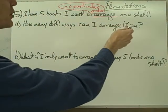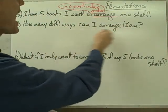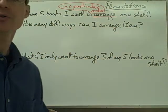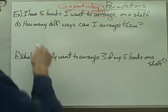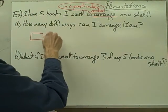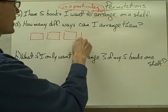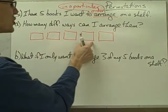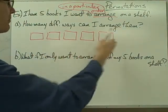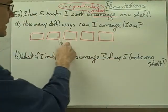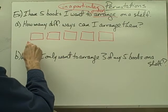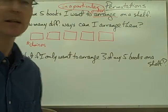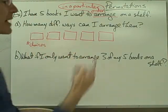I've got these five books I want to arrange on a shelf. How many different ways can I arrange them? I'm going to approach this the same way I approach other problems using the fundamental principle of counting — I'm going to use the box method. I have five boxes to think of as positions on a shelf. Each one of my boxes represents a number of choices I have for items to go in each particular slot. In this case, my items are books.